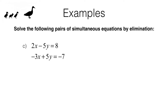Here's example C. I'm going to start off doing most of the work, then let you pause the video and complete the question. I'm going to add these equations together. On the right-hand side I get 8 plus negative 7, which is 1. On the left-hand side I add 2X minus 5Y to negative 3X plus 5Y. The Y's eliminate — minus 5Y and plus 5Y — and all I'm left with is 2X minus 3X, which is negative X. So if negative X equals 1, that means X equals negative 1.